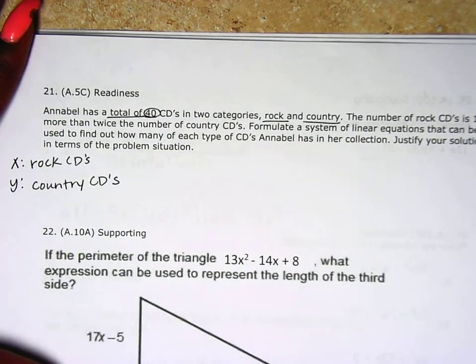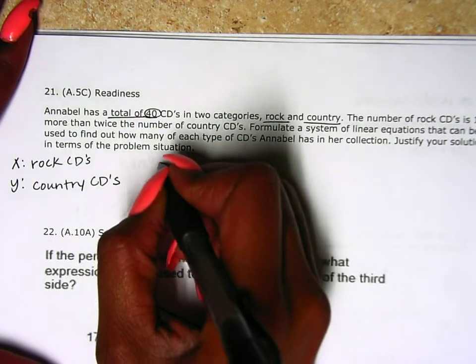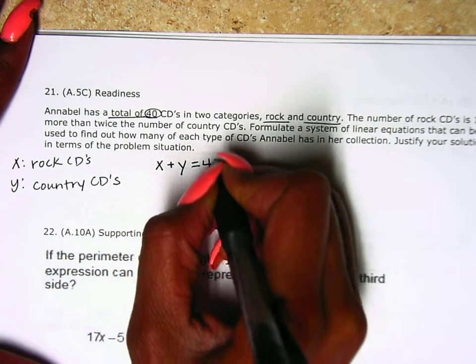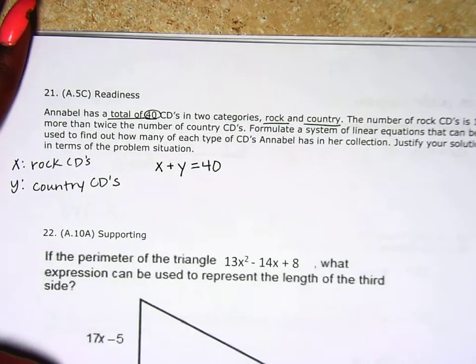Now if I have a total of 40 CDs, that means however many rock CDs plus however many country CDs equals 40, my total number of CDs.